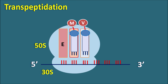The next step is transpeptidation. Two amino acids are present on the P site and A site. These amino acids should be converted into a peptide chain, and that process is transpeptidation. The peptide chain present at the P site is transported to the A site and attached with the amino acid already present on the A site. This reaction is mediated by the enzyme peptidyl transferase, resulting in the elongation of the peptide chain.